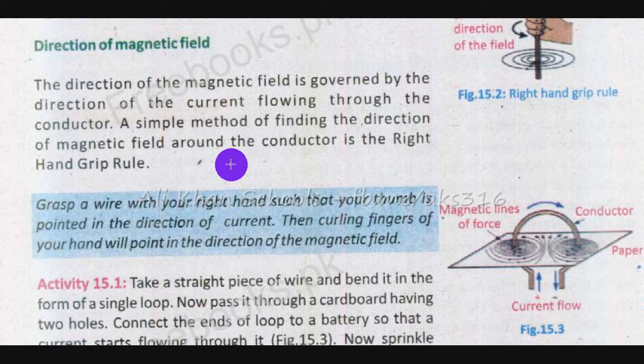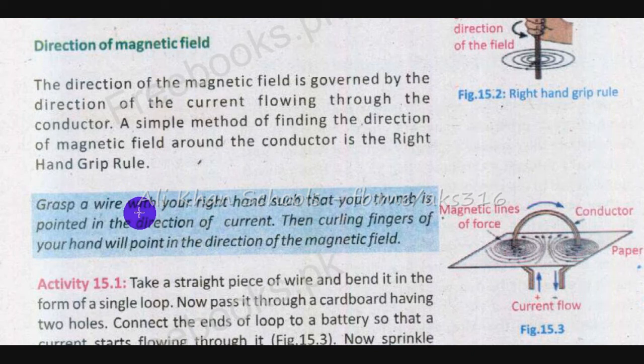A simple method of finding the direction of the magnetic field around the conductor is the right hand grip rule. Grasp a wire with your right hand such that your thumb is pointed in the direction of current; then the curling fingers of your hand will point in the direction of the magnetic field.